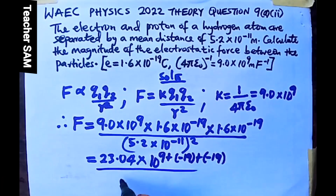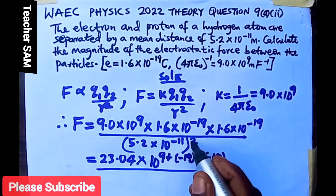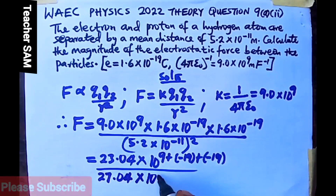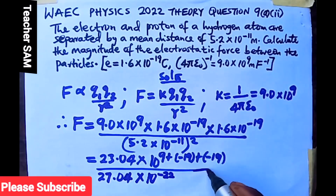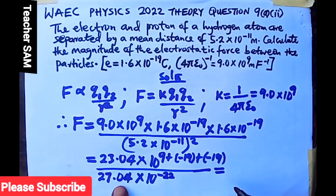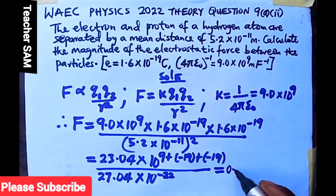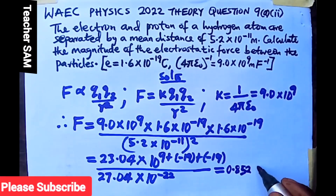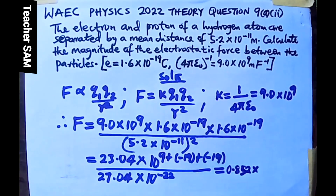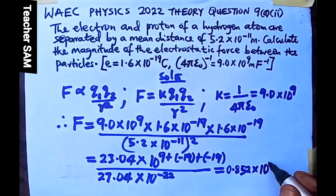That gives 10 raised to negative 29 in the numerator. For the denominator, squaring 5.2 gives 27.04. Since it is division, we subtract the denominator exponent. Dividing 23.04 by 27.04 gives 0.852. The combined exponent becomes 9 minus 19 minus 19, which equals negative 29, giving 0.852 times 10 raised to negative 29.